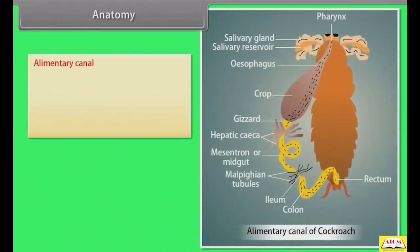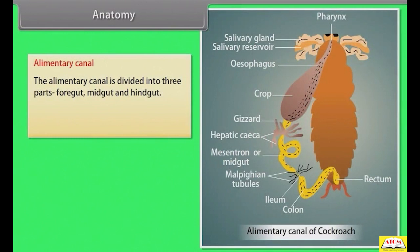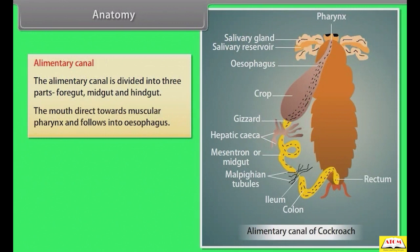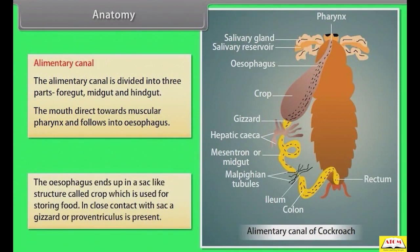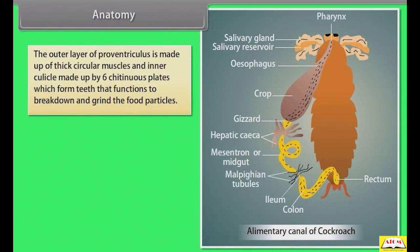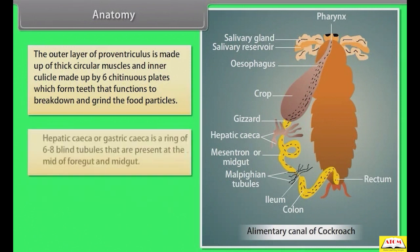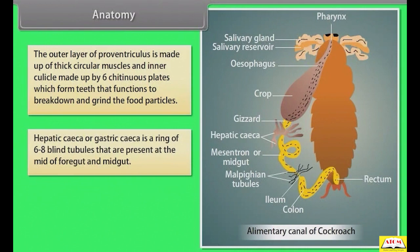The alimentary canal is divided into three parts: foregut, midgut, and hindgut. The mouth directs into the muscular pharynx, which leads into the oesophagus. The oesophagus ends in a sac-like structure called the crop, used for storing food. In close contact with the crop, a gizzard or proventriculus is present. The outer layer of the proventriculus is made of thick circular muscles, and the inner cuticular layer is made up of six chitinous plates which form teeth to break down and grind food particles.